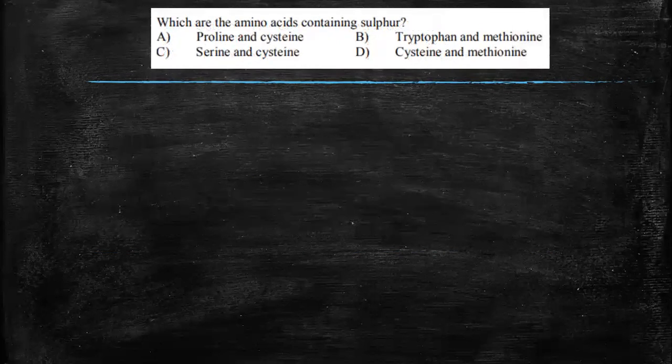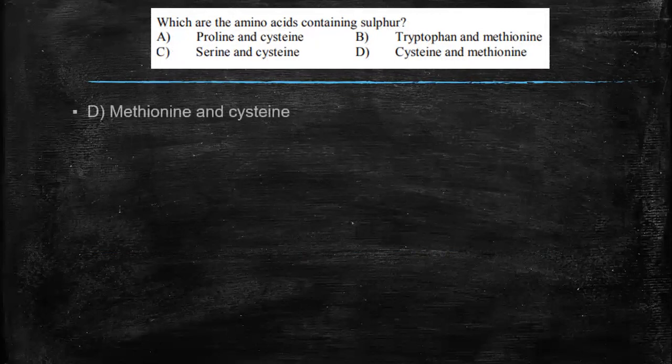Now the second question, which are the amino acids which contain sulfur? So this is a very straightforward question. And the answer is option B, cysteine and methionine.